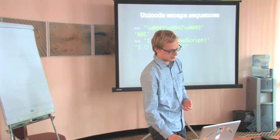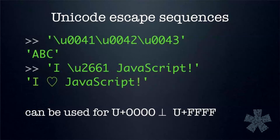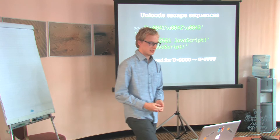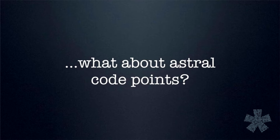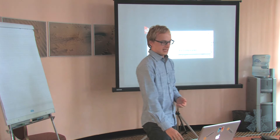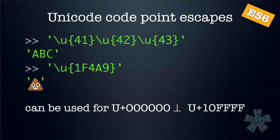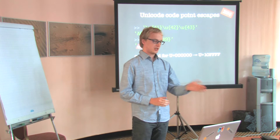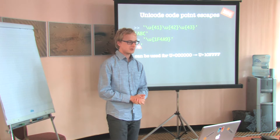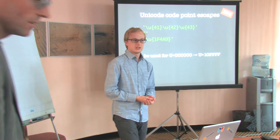However, we still only have four hexadecimal digits, so what do we do about all those astral symbols that need at least five hexadecimal digits? What about the pile of poo and other equally important astral symbols? Well, in ECMAScript 6 it will be really easy, because there will be a new type called Unicode code point escapes. It starts with a backslash followed by a U and then braces, and between those braces you can use up to six hexadecimal digits — enough to represent any Unicode code point. So using this type of escape sequence, you can escape any Unicode symbol simply by using its code point.